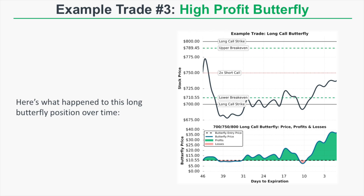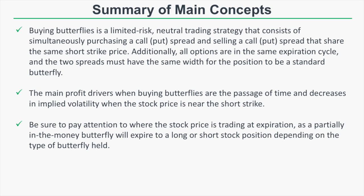This trade is an example of how purchasing a butterfly requires the stock to be very close to your short strike at expiration for a high profit. Since only the long 700 call is in the money at expiration and all other options are worthless, the position expires to +100 shares of stock. If you don't want a long stock position, you'd sell that 700 call — worth around $35 — before expiration. Either way you capture the same profit but avoid automatic exercise into a long stock position.